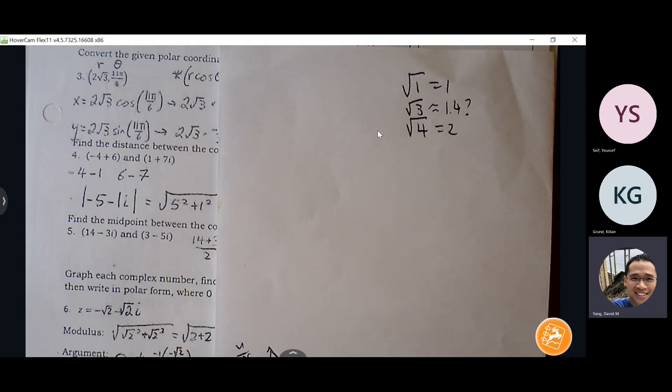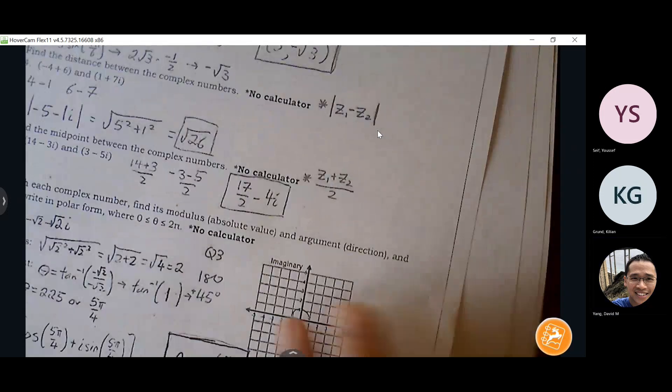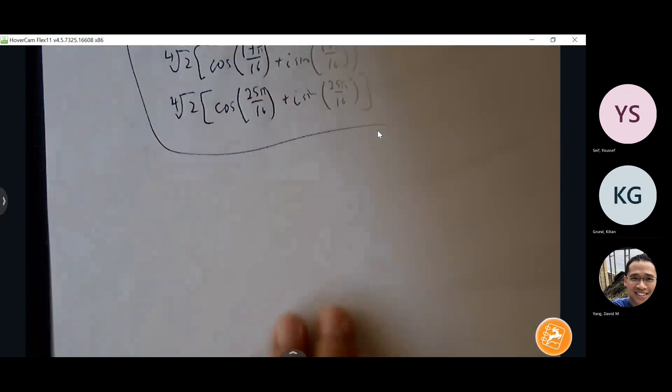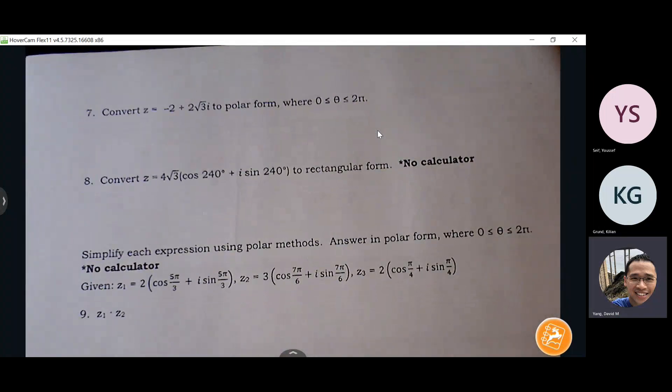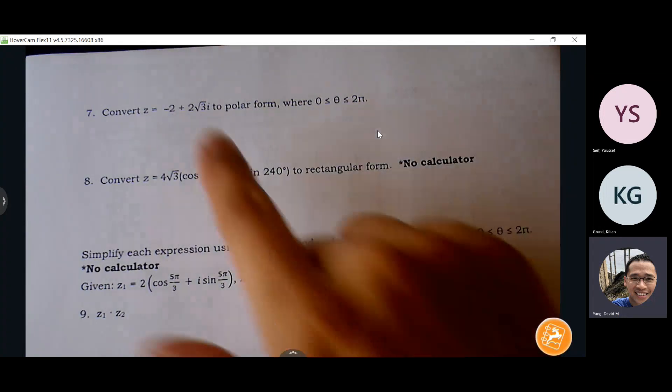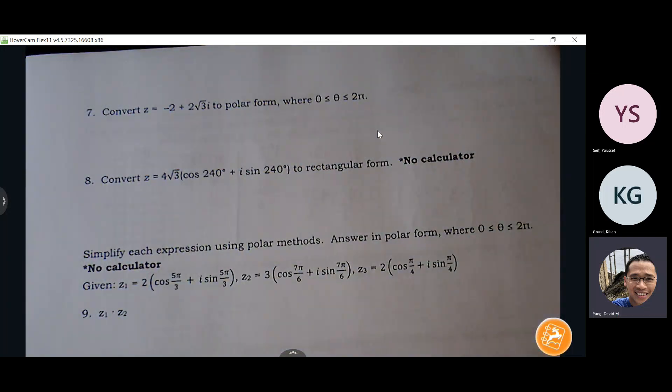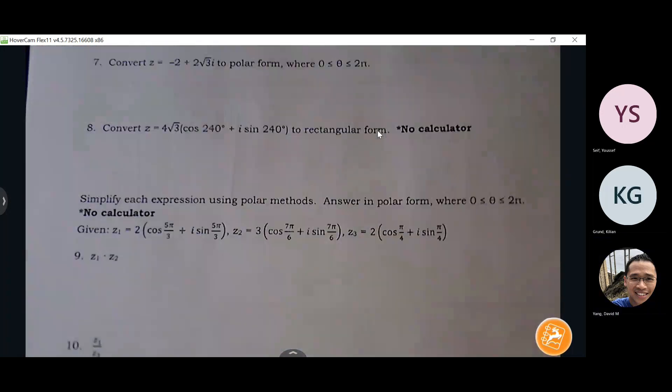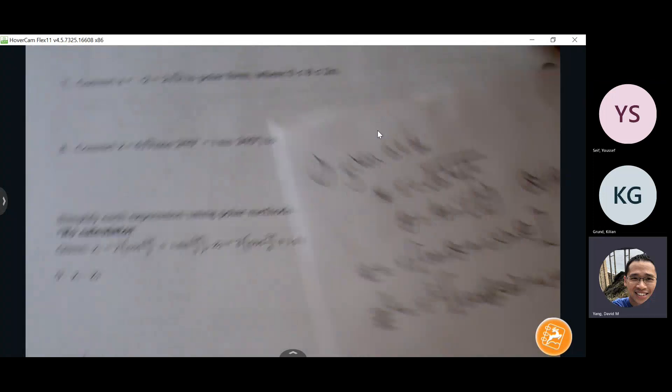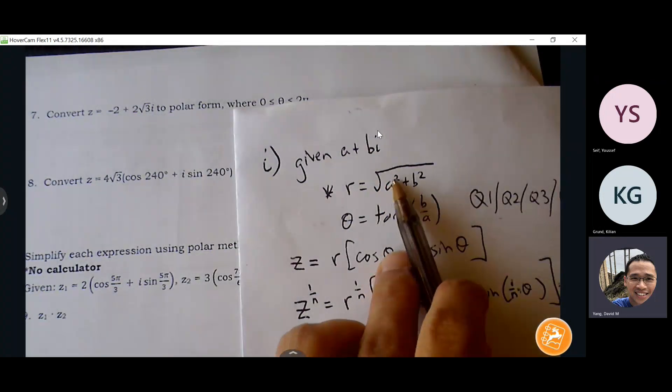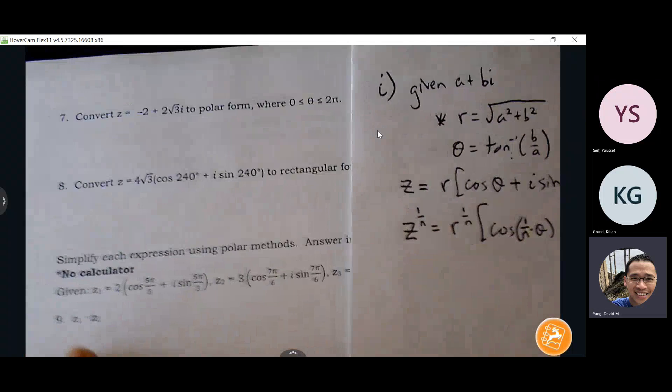You go over number seven. Okay, number seven says convert negative two plus two root three i to polar form. So this is my a and b value, so just like before, I'm going to be using my initial formulas there, find r and find theta, right? So here's my r.